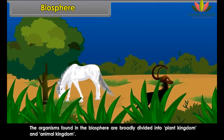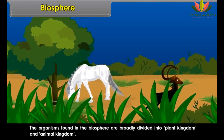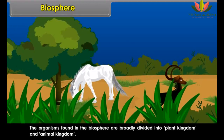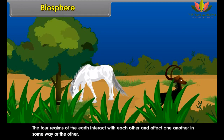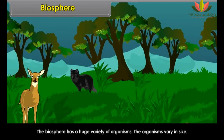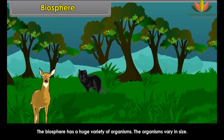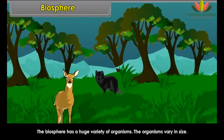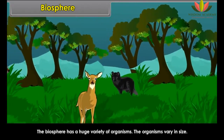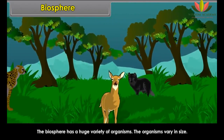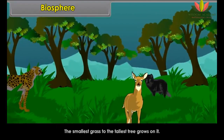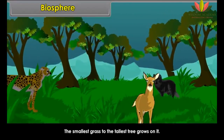Hydrosphere. The Greek word hydro means water. There are vast areas on the earth's surface which are covered with water. Water covers 71% of the earth's surface. The major water bodies like oceans, seas, lakes, ponds, etc., constitute the hydrosphere.